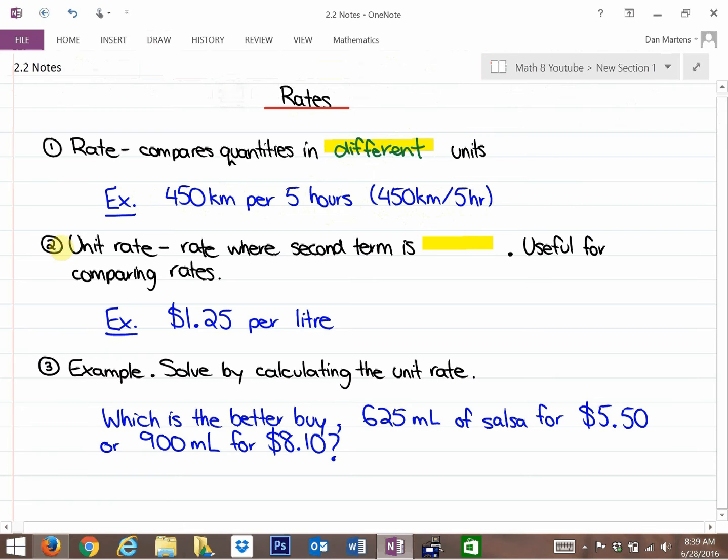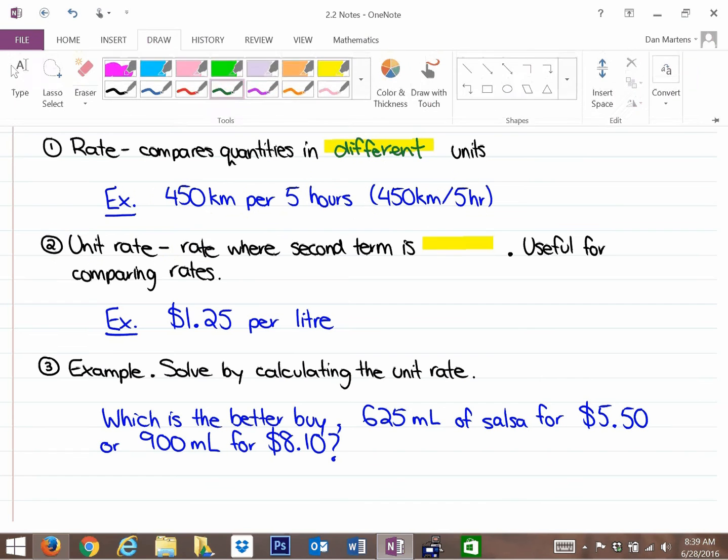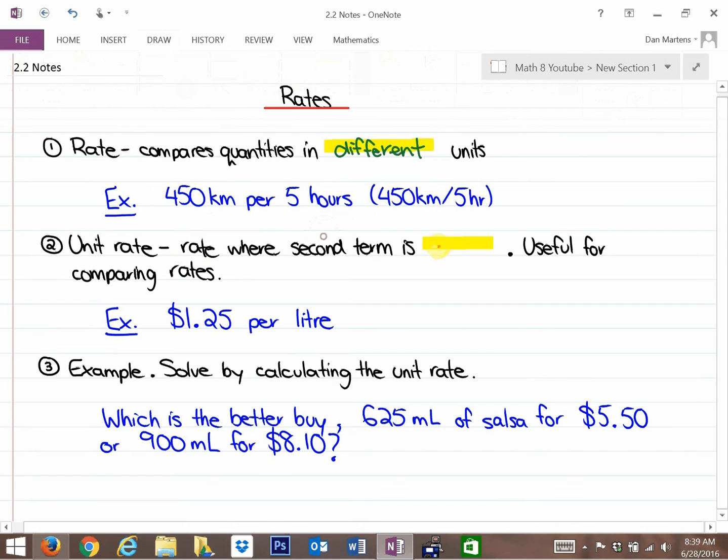The second key idea here, and again you want to pause this and write it down as we're going over it, is a unit rate. A unit rate is helpful. A unit rate is a rate where the second term is numerically equal to 1. So a unit rate is useful for comparing rates. For example, $1.25 per liter is a unit rate because it's per 1 liter.